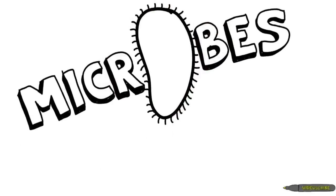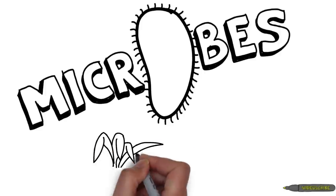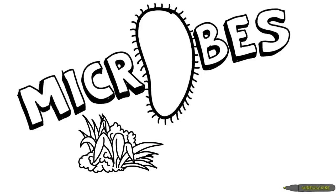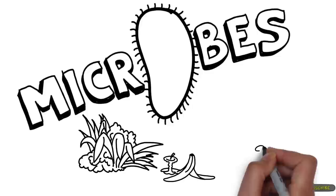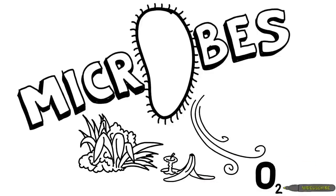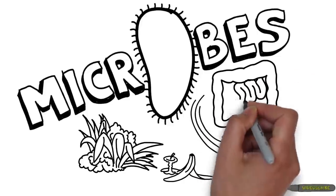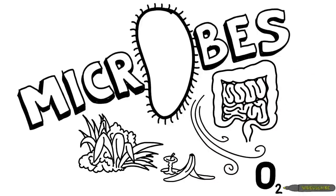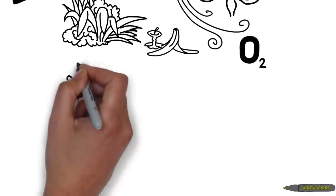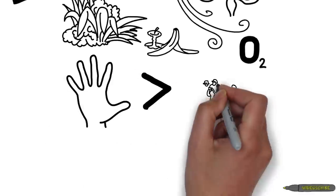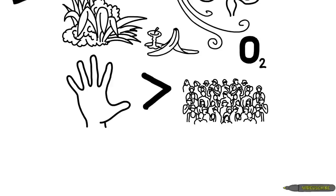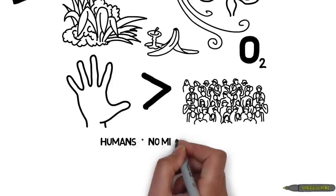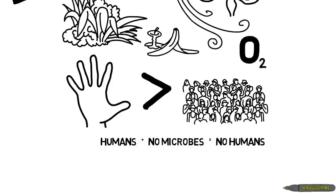They are the oldest form of life on Earth. Without them, plants couldn't grow. Garbage wouldn't decay. We wouldn't have enough oxygen to breathe, and we wouldn't be able to digest food. There are more of them on your hand right now than there are people in the world. We cannot see them, yet we humans would not be able to survive without microbes.